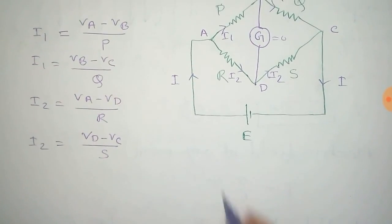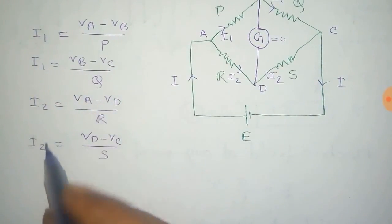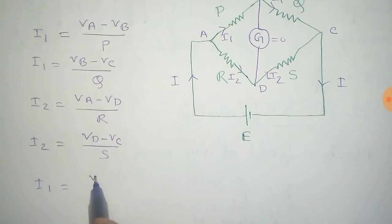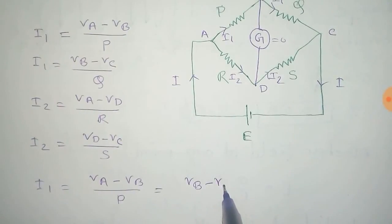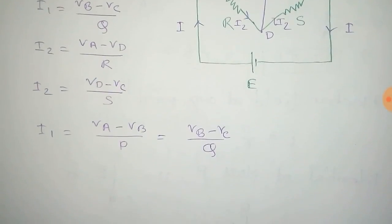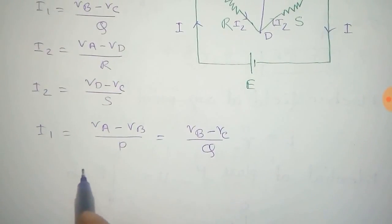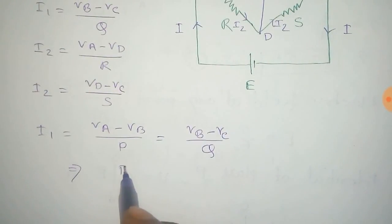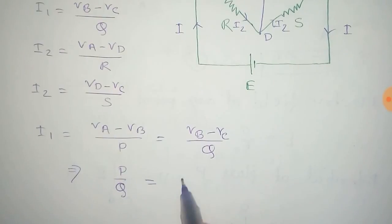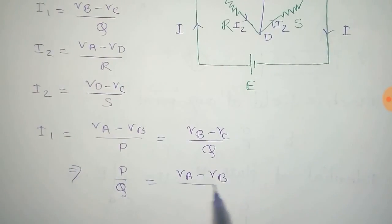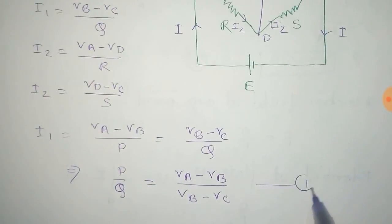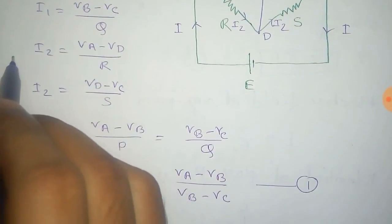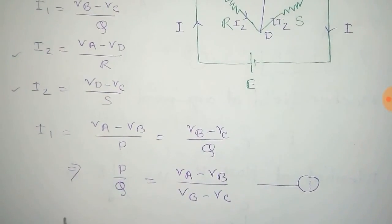Considering the case for I1, we can equate this: VA minus VB by P equals VB minus VC by Q. We equate the value of I1. And from this we can write that P by Q equals VA minus VB by VB minus VC, and we take this as equation number 1. Equating the value of I2 we get: